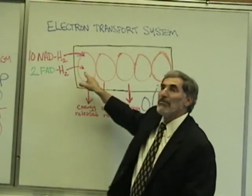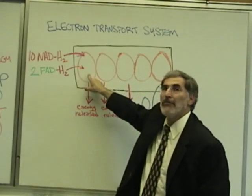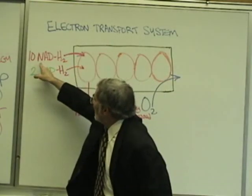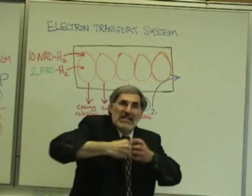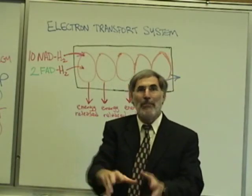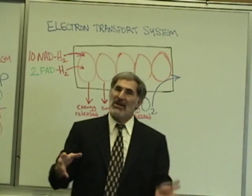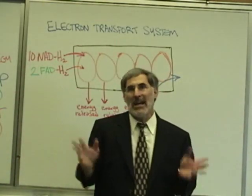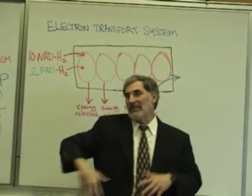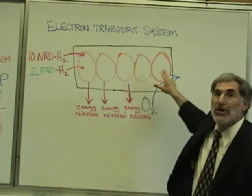In the electron transport system we don't have a row of people in a line. We have a row of coenzymes, vitamins and minerals that are lined up. The NAD and FAD release these hot potato hydrogen atoms that have been removed not from the barbecue grill but from a sugar molecule. They are high in energy — the electrons are orbiting at a high energy orbital level. These hot potato hydrogen atoms are now released to this row of coenzymes.